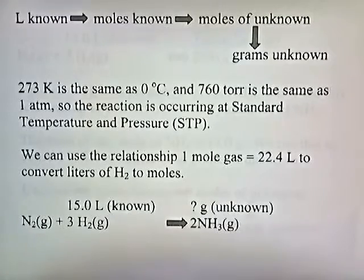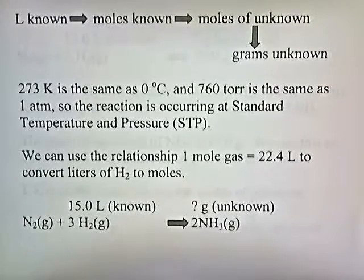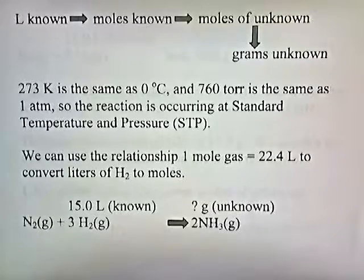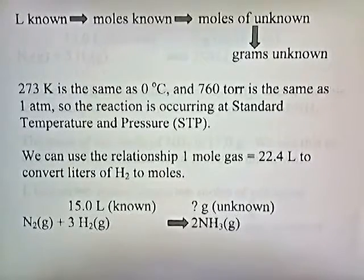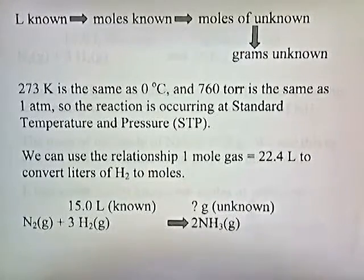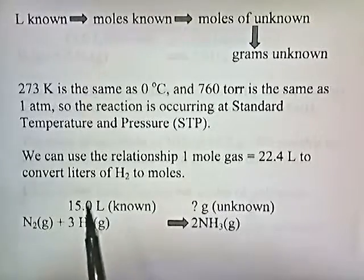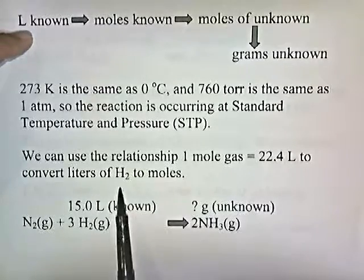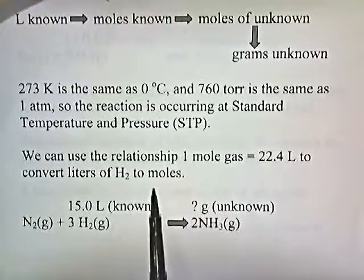273 Kelvin is the same as zero degrees Celsius, and 760 Torr is the same as one atmosphere, so the reaction is occurring at standard temperature and pressure. Since it's occurring at STP, we can use the relationship that one mole of a gas is equal to 22.4 liters to convert liters of H₂ to moles.